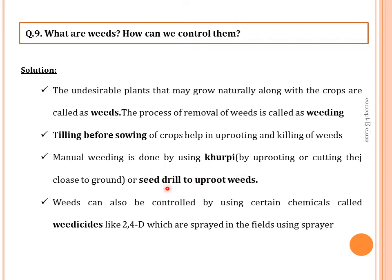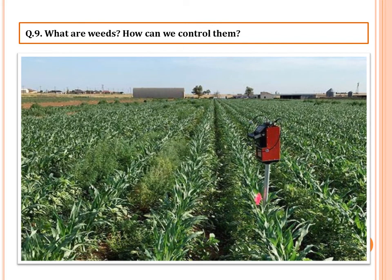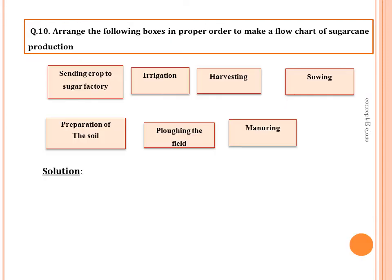Manual weeding is done by using a kurpi — uprooting or cutting the weeds close to the ground — or by using a seed drill to uproot the weeds. Weeds can also be controlled by using chemicals called weedicides like 2,4-D, sprayed in the fields. Weeds compete with crops for sunlight, soil, and other nutrients, so it is important to control them.